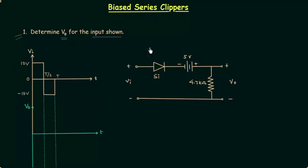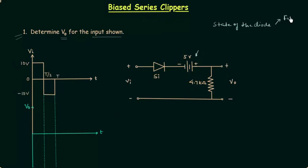I am calling this circuit a biased series clipper circuit because we have an additional DC source present in this circuit. Whenever you have this situation, always try to find out the effect of this DC source on the state of the diode — whether the diode is forward biased or reverse biased by this DC source. For this purpose, I will forget VI and only consider the DC source.